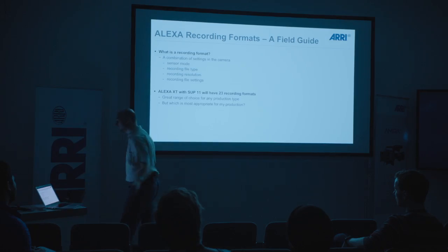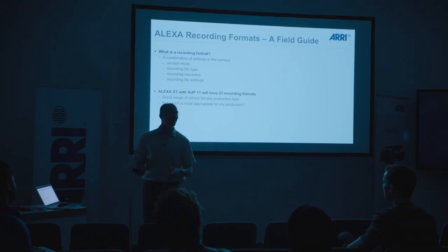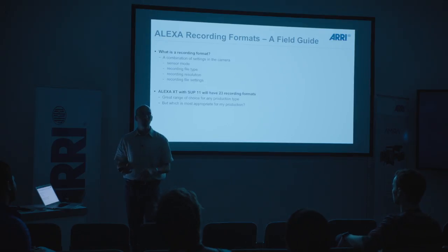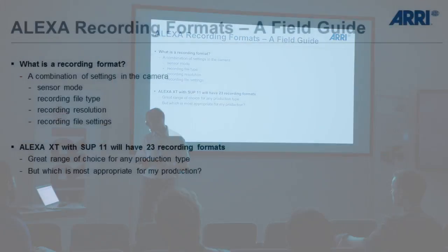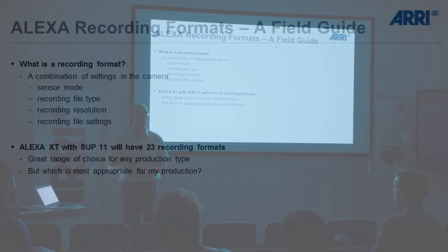We'll start with recording format. A recording format is a combination of various things you can set in the Alexa — the sensor mode, the recording resolution, and what file type you use. The Alexa XT with software 11, assuming it's January 2015, will have 23 different recording formats.